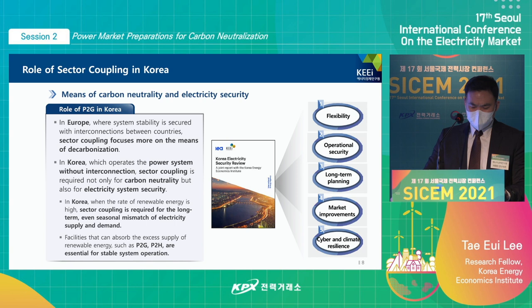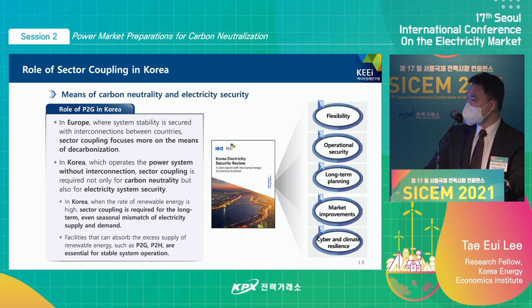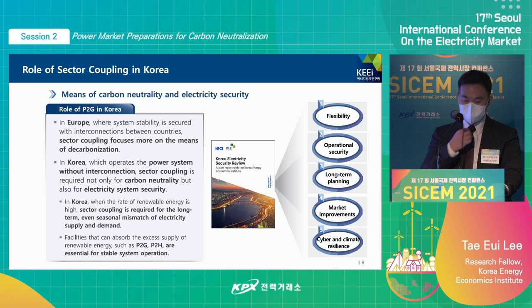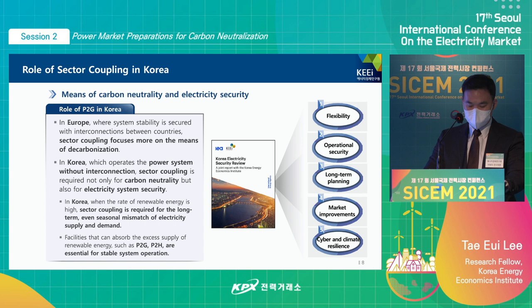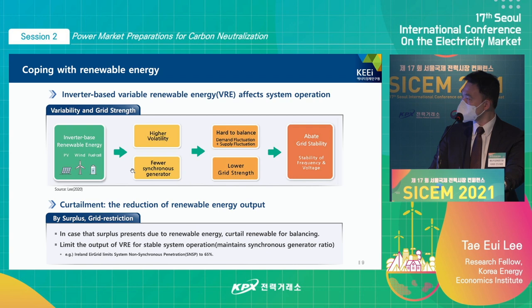Do we need sector coupling in Korea, and what could be the useful use cases? We can use sector coupling for decarbonization like overseas countries, but Korea is different from Europe. Korea operates the electricity system without interconnection, meaning there is no other way to supply electricity if there is a problem. We need to secure electricity security. Last year, in collaboration with the IEA, we conducted research on Korea's electricity security, and the report proposes measures like P2G or P2H.